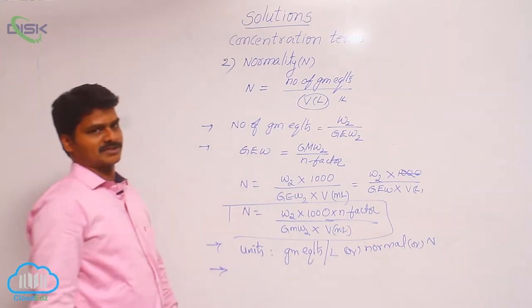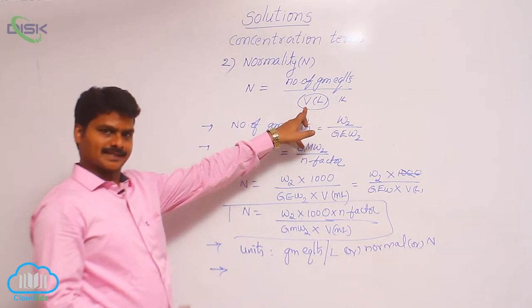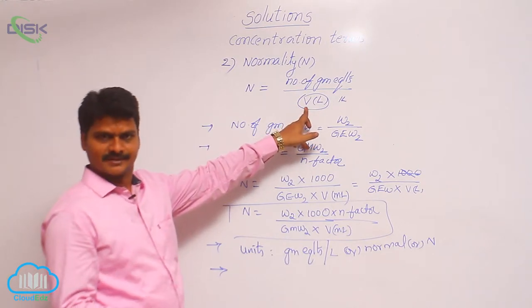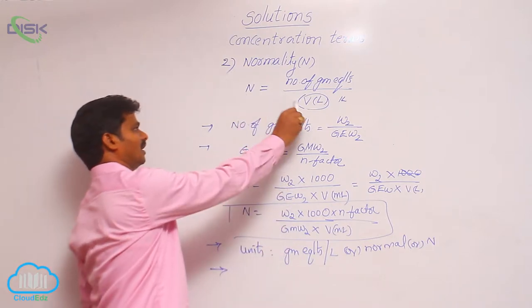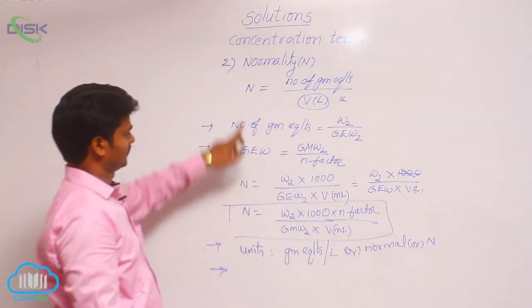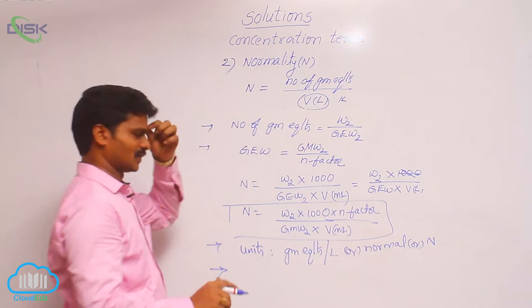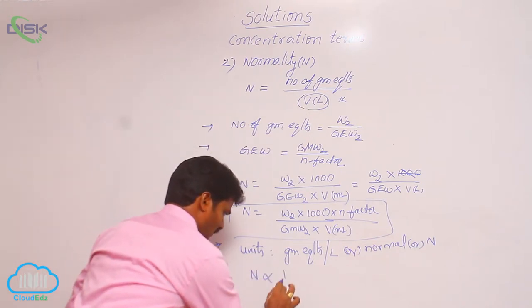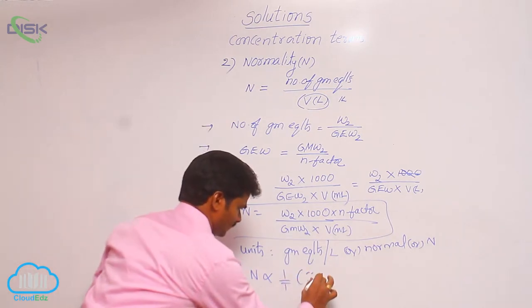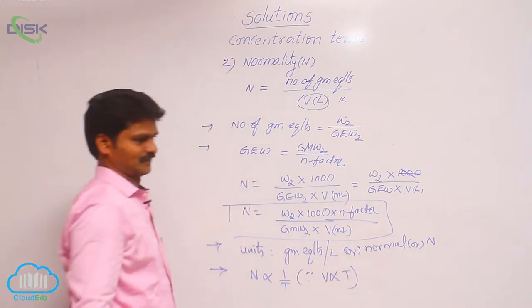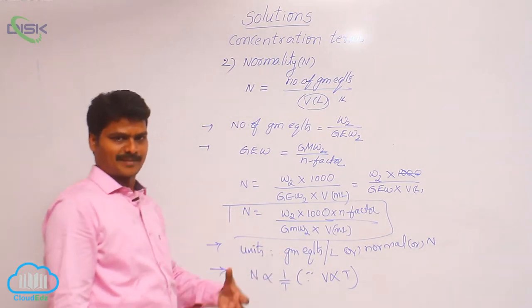How does normality depend on temperature? In its formula there is a volume term. When there is a volume term in the formula, the quantity is temperature dependent. Normality and volume are inversely related, and volume and temperature are directly related. Therefore, normality is inversely proportional to temperature, just like molarity. With an increase in temperature, normality decreases.